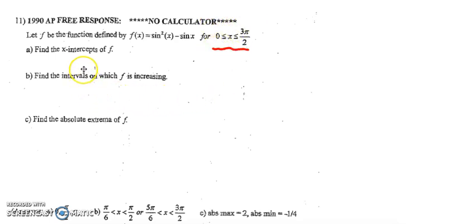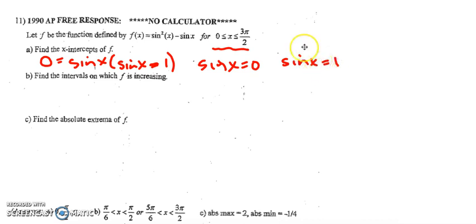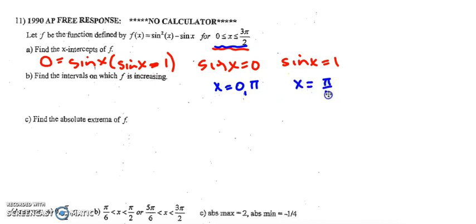First, they want you to find the x-intercepts of the function, so that is where the function equals zero. Setting the function equal to zero and factoring out sine x, we get sine x times (sine x minus one). This equals zero if sine x equals zero or sine x equals one. On the given interval from zero to three pi over two, sine equals zero at zero and pi, and sine equals one at pi over two. Those are the three x-intercepts.